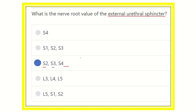The pudendal nerve has other branches that supply other parts of the perineum and surrounding structures. But for the external urethral sphincter, the nerve root of the pudendal nerve is sacral 2, sacral 3, and sacral 4. Thank you all.